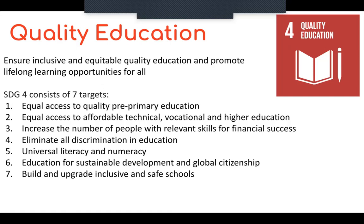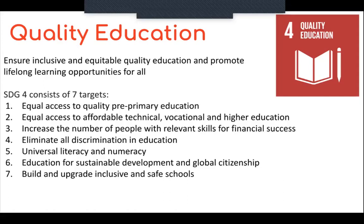The sustainable development goal for quality education aims to provide children and young people with quality and easily accessible education plus other learning opportunities. Quality education consists of seven targets, mainly including universal literacy and numeracy, but also including lifelong skills and skills needed for financial success. A major component in acquiring knowledge and valuable skills is the learning environment, and a safe learning environment is essential in the education of children.